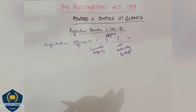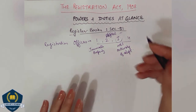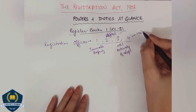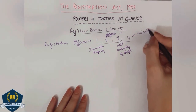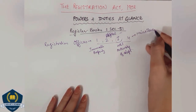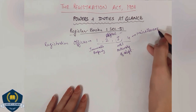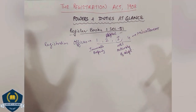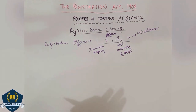Coming to the next book — book number 4. Here come your rest of the other miscellaneous records. All miscellaneous registered documents come into book number 4.